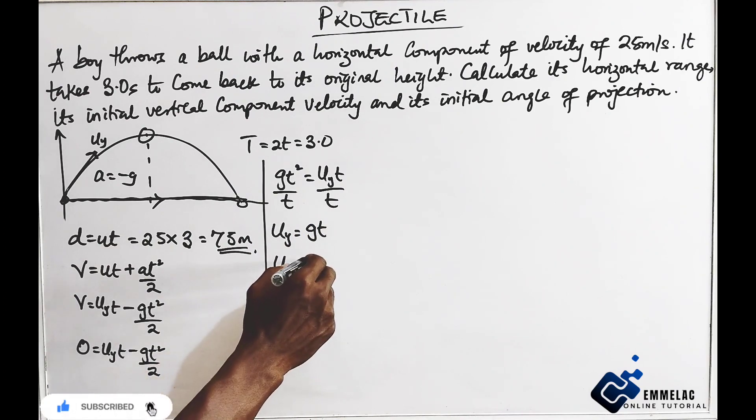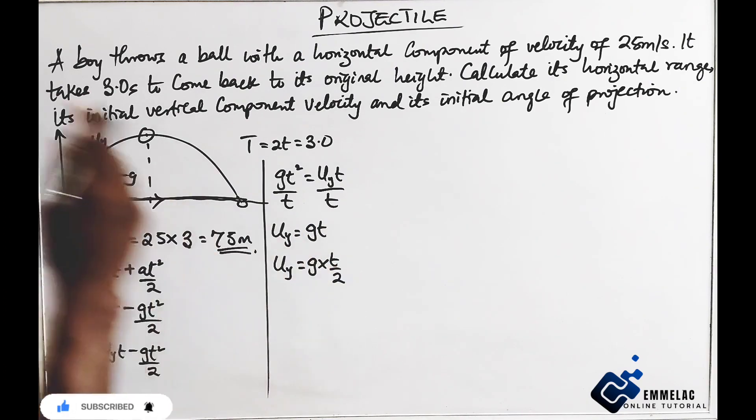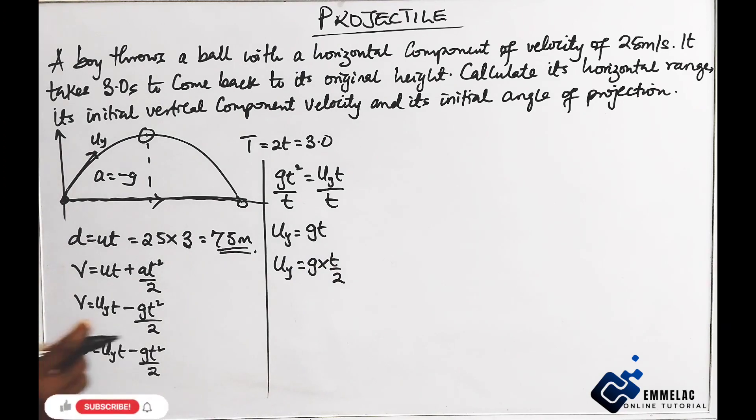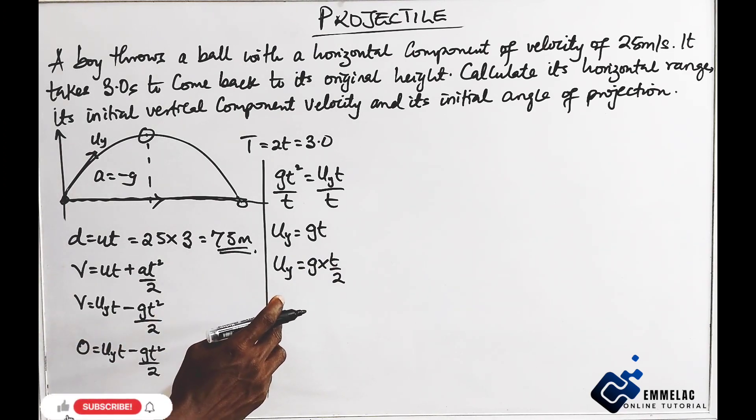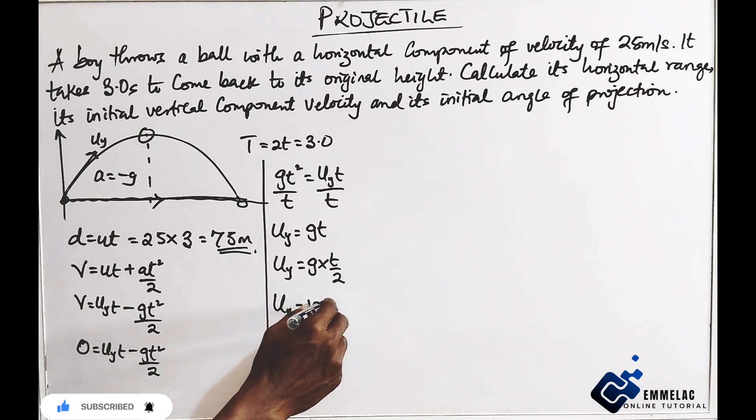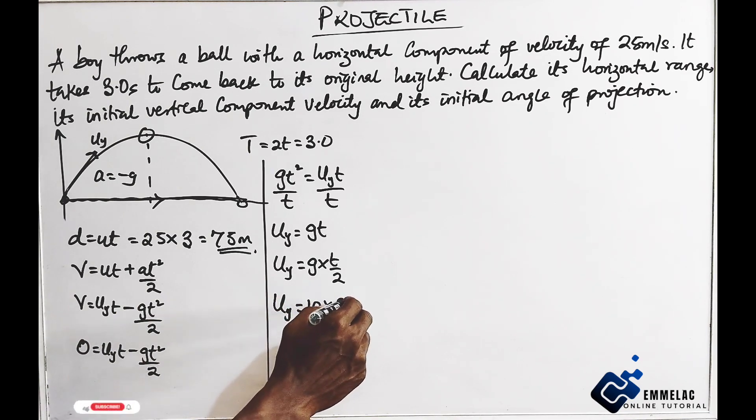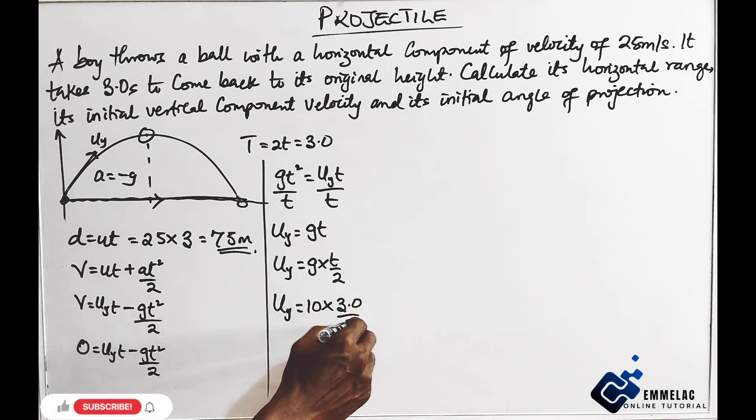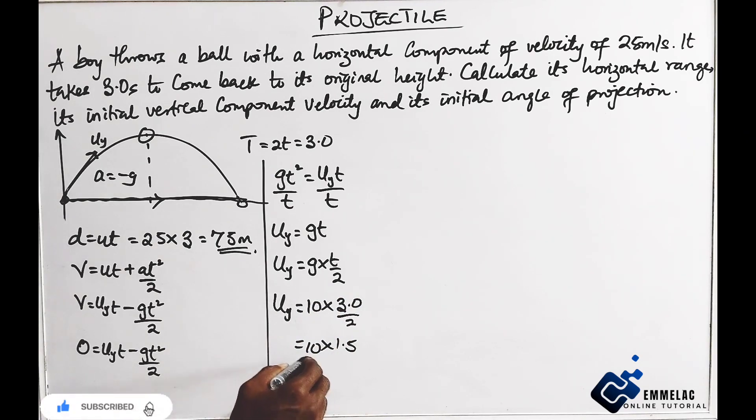So here you have that U sub Y equals G times T over 2. So we can now input the necessary parameters. Here you have U sub Y equals 10 times 3 over 2. This will now be 10 times 1.5, which gives us 15 meters per second.